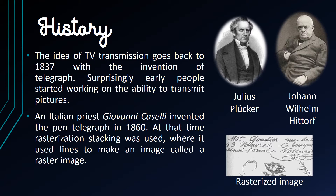In 1860, an Italian priest, Giovanni Casselli, invented the pen telegraph. The device would transmit across normal telegraph lines. Devices at both ends would be synchronized with a pendulum. The message would be written with insulating ink on a metal plate. The synchronized receiving apparatus would use a piece of paper and impregnate it with a chemical that darkened when the current passed through it.